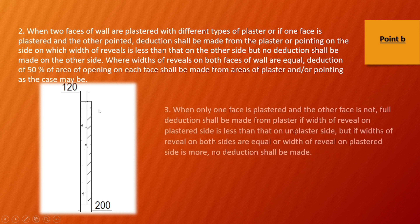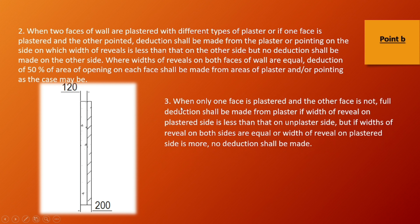Now the next point: only one side is plastered and the other side is not. Full deduction shall be made from the plaster side if without reveals. If you have plastered on one side — whether 120mm or 80mm — you have to minus the opening area from the plaster side.